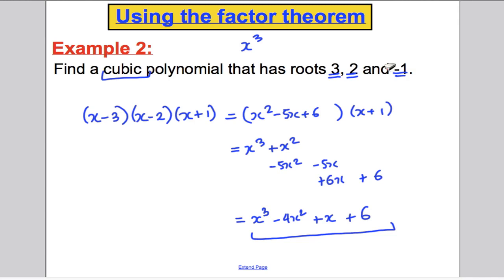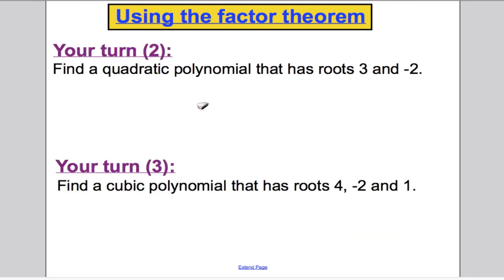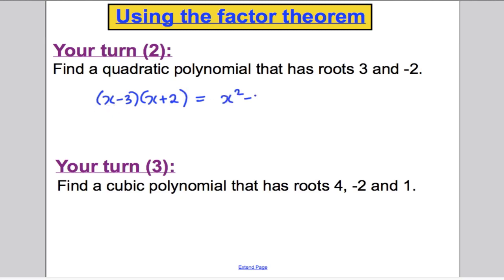Find a quadratic with roots 3 and minus 2. If 3 is a root, x minus 3 is a factor; if negative 2 is a root, x plus 2 is a factor. Multiplying those out gives the quadratic polynomial x squared minus x minus 6. Done in one step — that polynomial has roots 3 and minus 2.